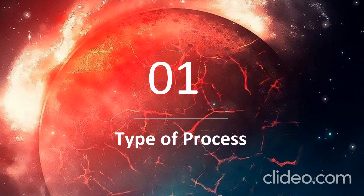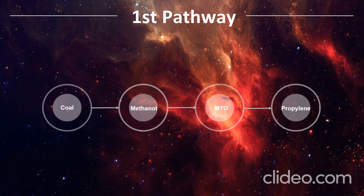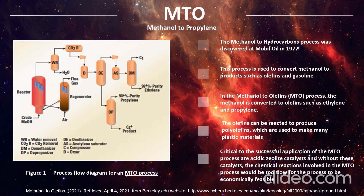For the type of process, the first pathway we chose is coal going into methanol by the MTO process to produce propylene. The methanol-to-hydrocarbon process was discovered at Mobil Oil in 1977 and is used to convert methanol to products such as olefins and gasoline. In the methanol-to-olefins (MTO) process, methanol is converted to olefins such as ethylene and propylene, which can be reacted to produce polyolefins used to make many plastic materials. Critical to the MTO process are acid zeolite catalysts; without them, the chemical reactions would be too slow to be economically feasible.